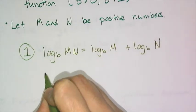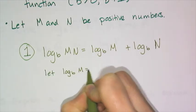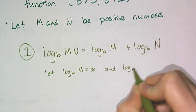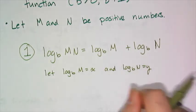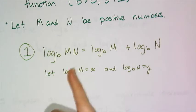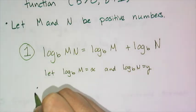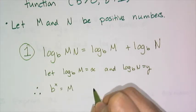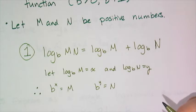So to do this proof we are going to let log base b of m equals x and log base b of n equals y. That's partially because I don't want to write all that stuff out over and over again. Now if I let x be that log base b of m and let y be log base b of n, I can conclude that b to the x equals m and b to the y equals n by the definition of a logarithm.